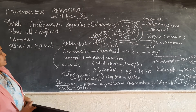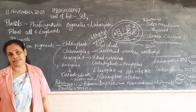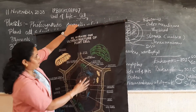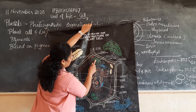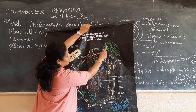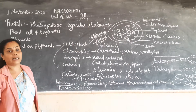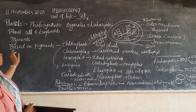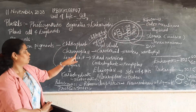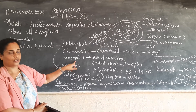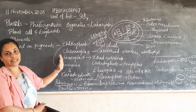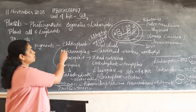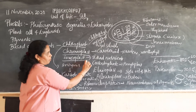Plastids contain pigments - pigments meaning colored substances. There are three types of plastids: chloroplast, chromoplast, and leukoplast. These are the three plastids found in plant cells.